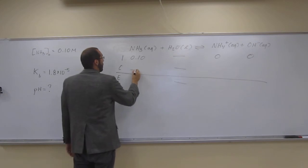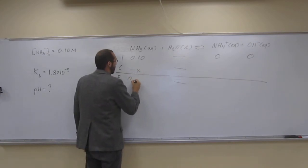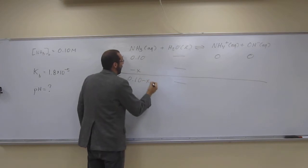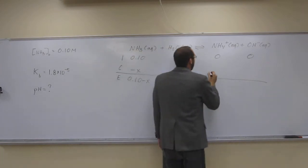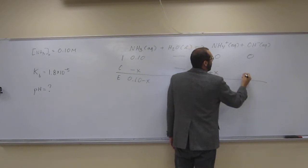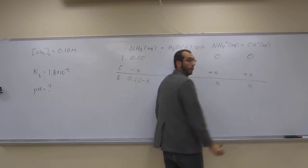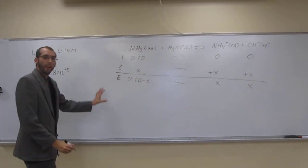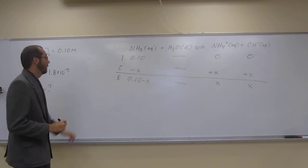So we're going to subtract X from that. Remember, in this case, we're going to be using our 5% rule, so we'll get rid of that X there. We're going to add X here and add X here. It's going to give us X and X. Does that make sense as far as we've gone? Tameka, you got this one? Okay, wonderful.